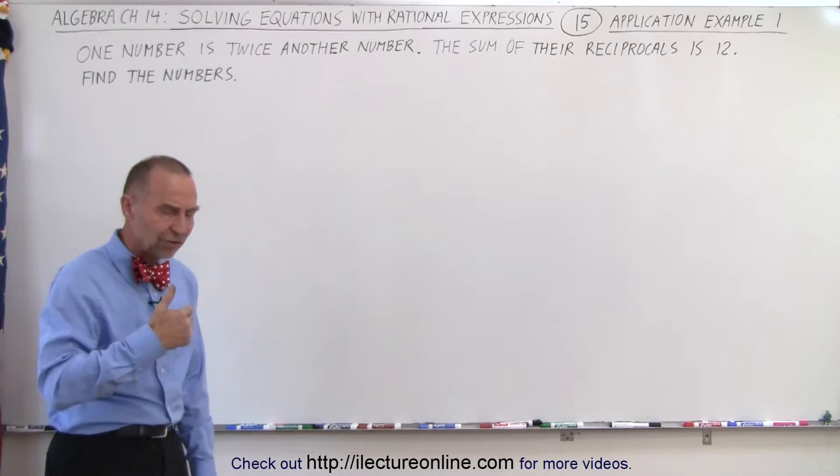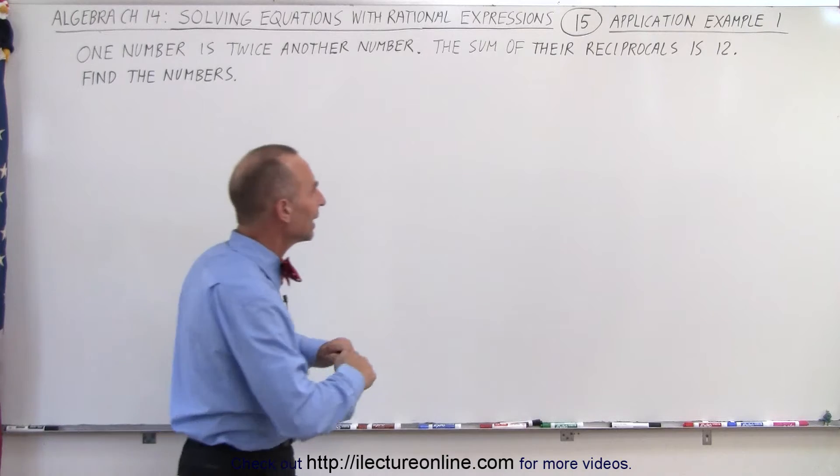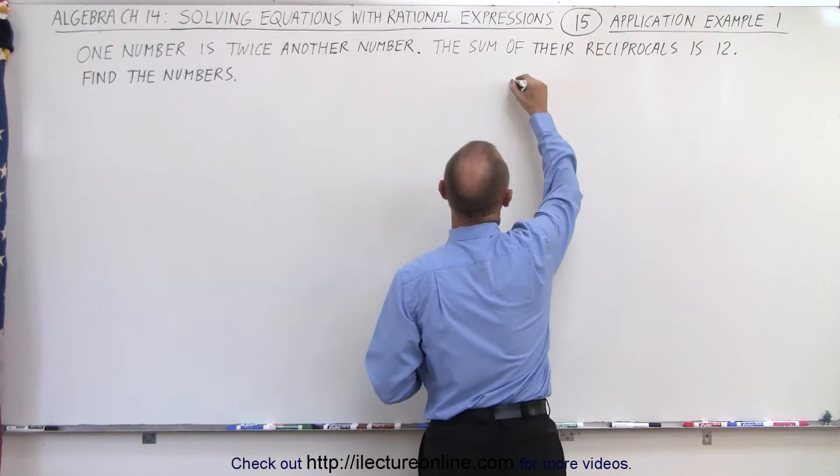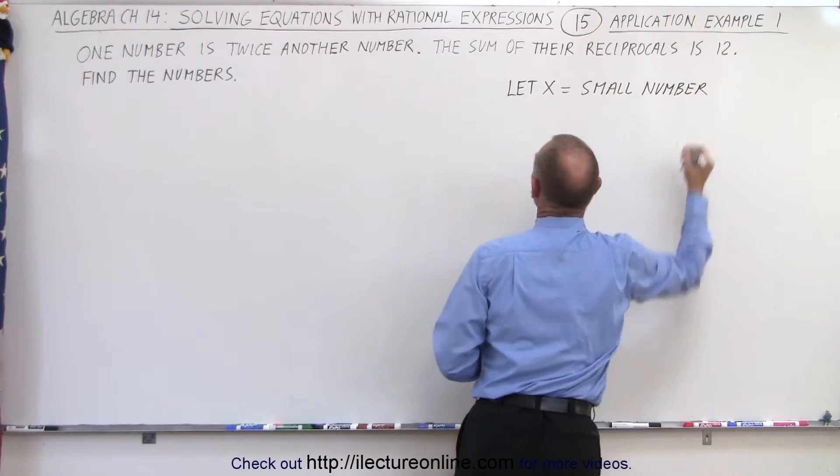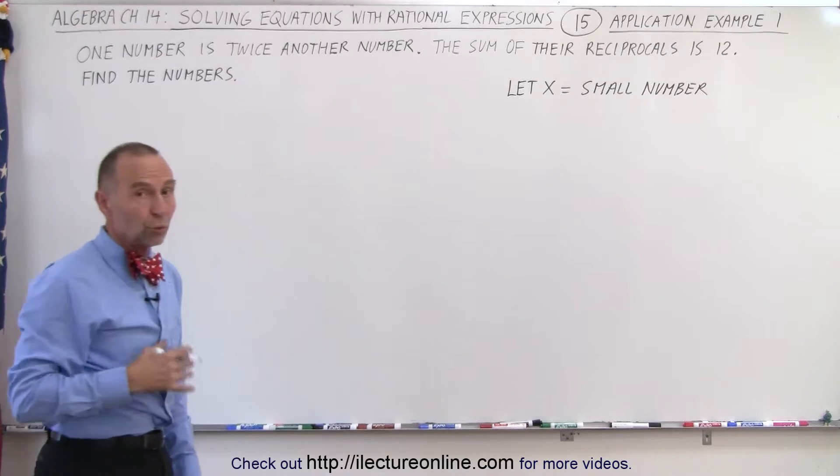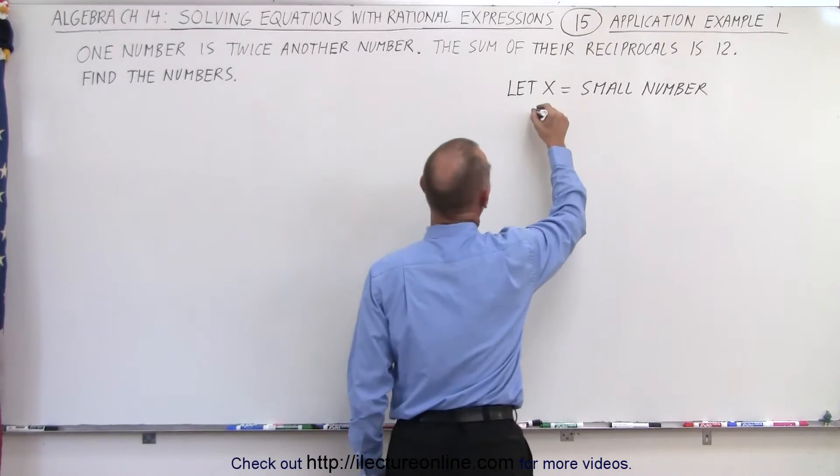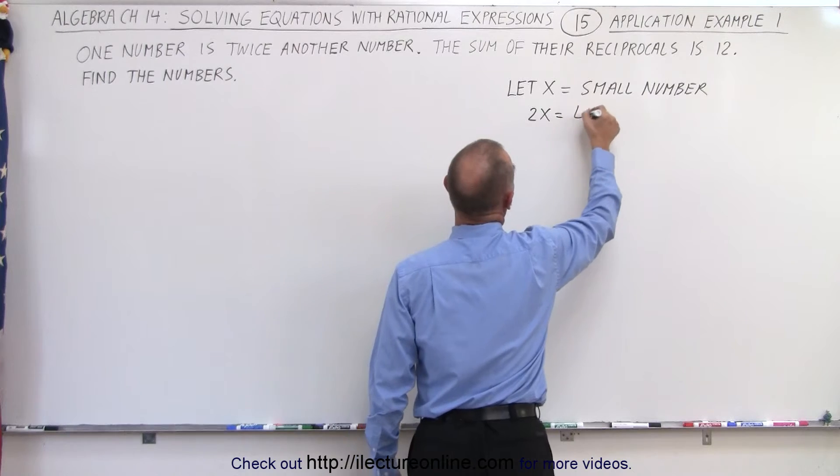Okay, so we need to use the same principle as before. We're going to let x equal the small number. And since the other number is twice that number, twice as big, then 2x is equal to the large number.